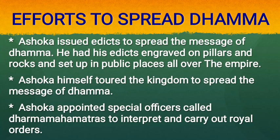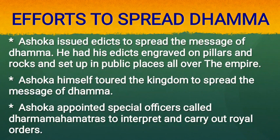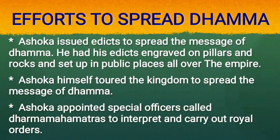Efforts to spread Dhamma: Ashoka issued edicts, which are known as royal orders, in order to spread the message of Dhamma. He had edicts engraved on pillars and rocks, and set up in public places all over the empire. The edicts were written in local scripts; most of them were written in Prakrit using the Brahmi script. In his edicts, Ashoka addressed himself as the father of his people. He himself toured the kingdom to spread the message of Dhamma. He also appointed special officers known as Dharma Matras to interpret and carry out royal orders.